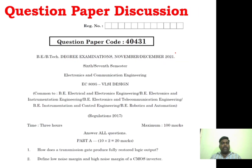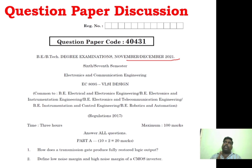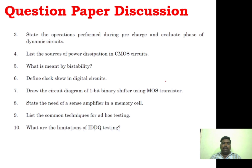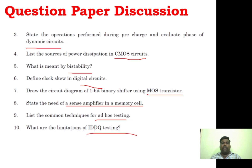Now, question paper discussion. We are going to look at the November/December 2021 question paper. As I said, you can expect two-mark questions — at least prepare two-mark answers from each question paper, covering five years. You can see topics like transition gate, noise margin, CMOS inverter, CMOS circuit, bistability, digital circuit, mass transmitter, sense amplifier, and IDDQ testing. Testing is very important.